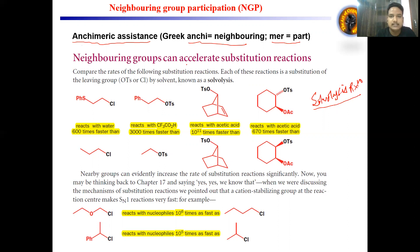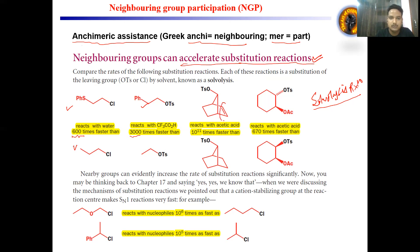Neighboring group participation can accelerate the substitution reaction. You know about SN1 and SN2, but NGP can also accelerate the rate of reaction. For example, comparing phenyl sulfide and without phenyl sulfide, the rate of reaction is enhanced by 600 times. Comparing phenyl-containing with without phenyl, the rate is 300 times higher. And for the norbornane system, due to the presence of this double bond, the rate is enhanced by 10 raised to the power 11 times — a very important example.